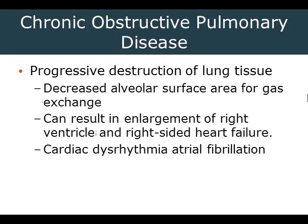The progressive destruction of lung tissue results in decreased alveolar surface area for gas exchange, usually resulting in enlargement of the right ventricle and right-sided heart failure — something called cor pulmonale. Basically, the lungs aren't as receptive to accepting blood; it's harder for blood to get pumped through and re-oxygenated, causing backup and extra pressure on the right side of the heart, eventually causing heart failure. Cardiac dysrhythmias such as atrial fibrillation are pretty common in this population as well — they've been oxygen-starved for years and years.